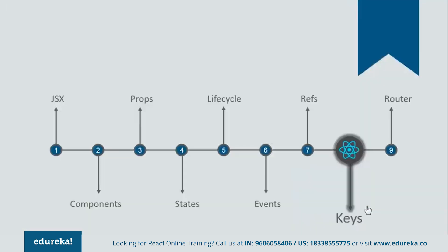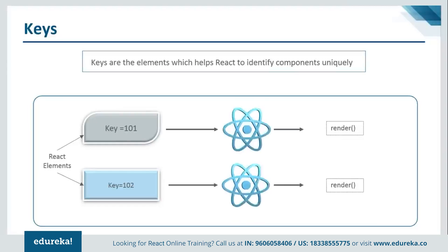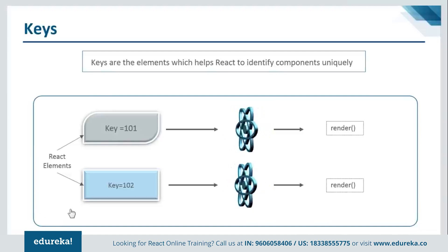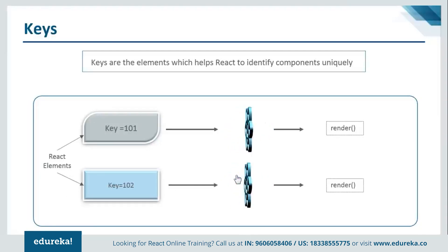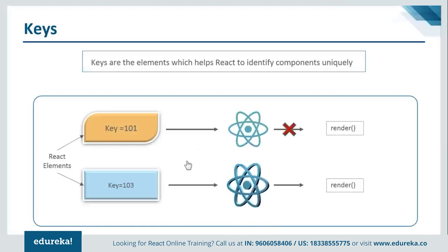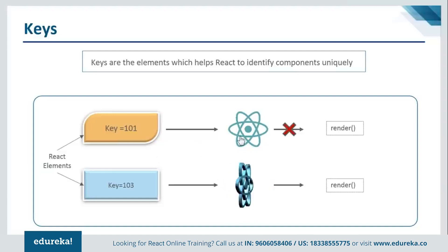Let's take up our next topic: keys. Keys are elements that help React identify different components uniquely. They are especially helpful when working with dynamically created components. Assigning key values helps identify components uniquely even after they've changed. For example, if you have two components with key 101 and key 102 and they render for the first time, React renders them without problem. But next time, if component 1's key is the same and component 2's key has changed, React will render only the second component since the first one's key hasn't changed — it considers the element the same, so there's no need to re-render it.